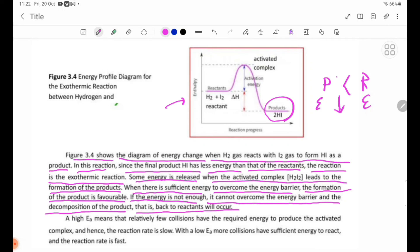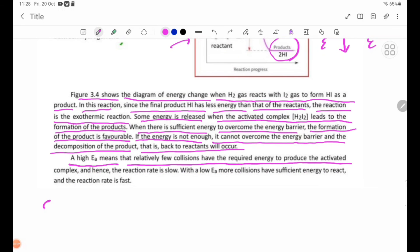A high Ea means that relatively few collisions have the required energy to produce the activated complex, and hence the reaction rate is slow. With a low Ea, more collisions have sufficient energy to react and the reaction rate is fast.